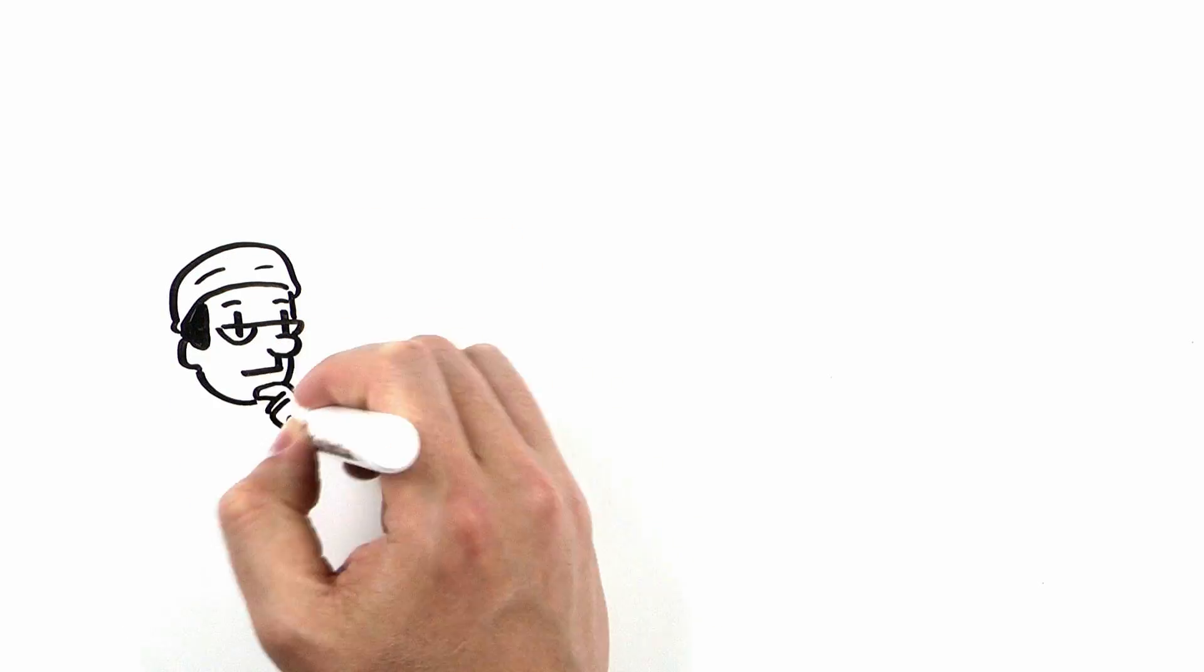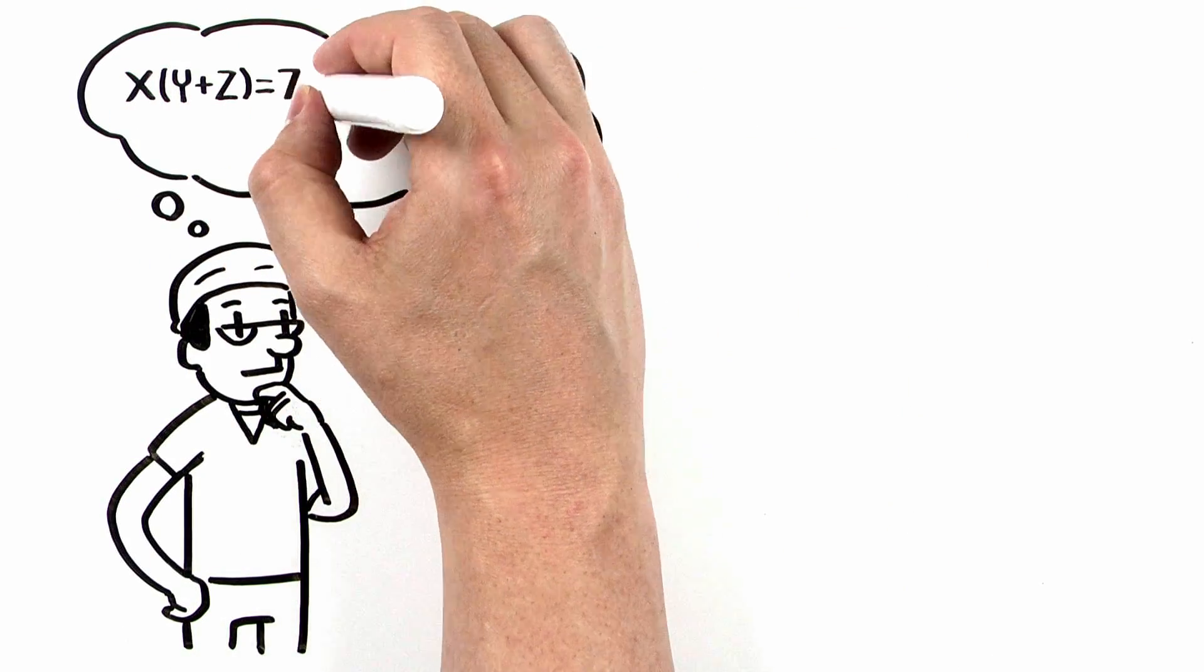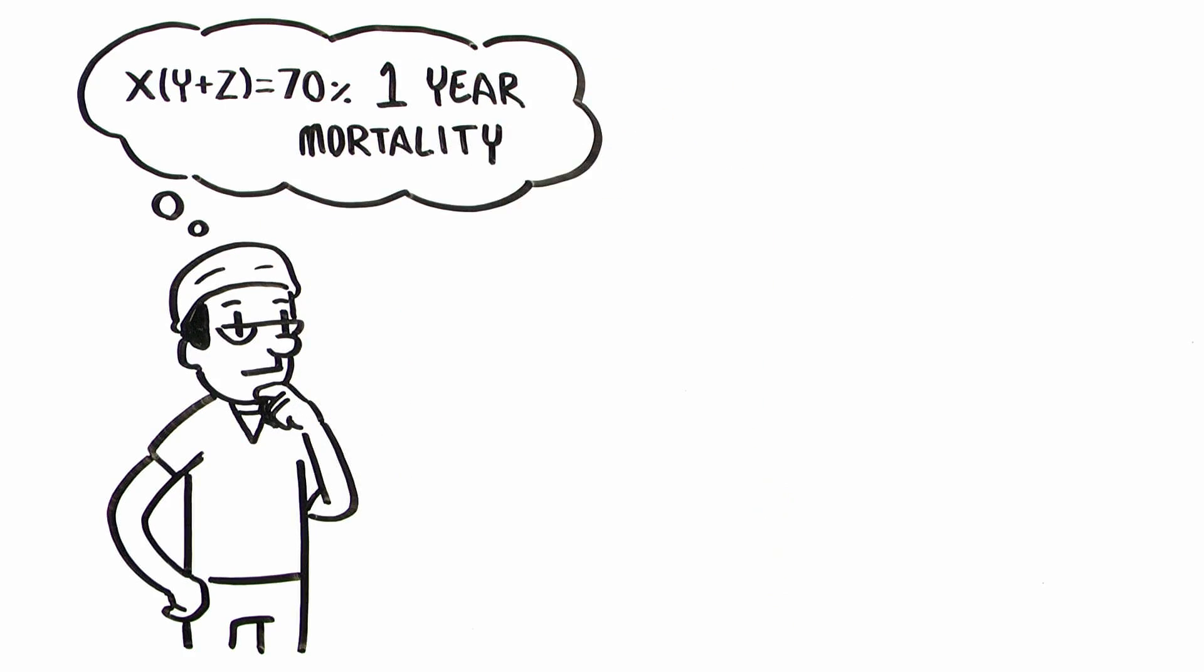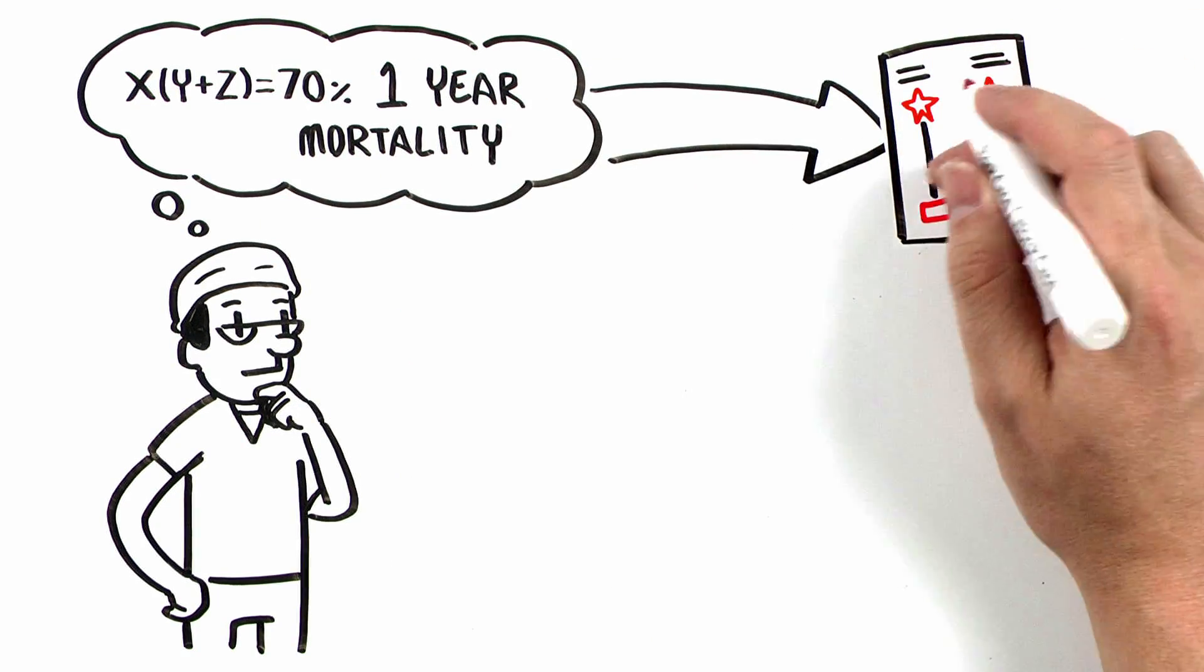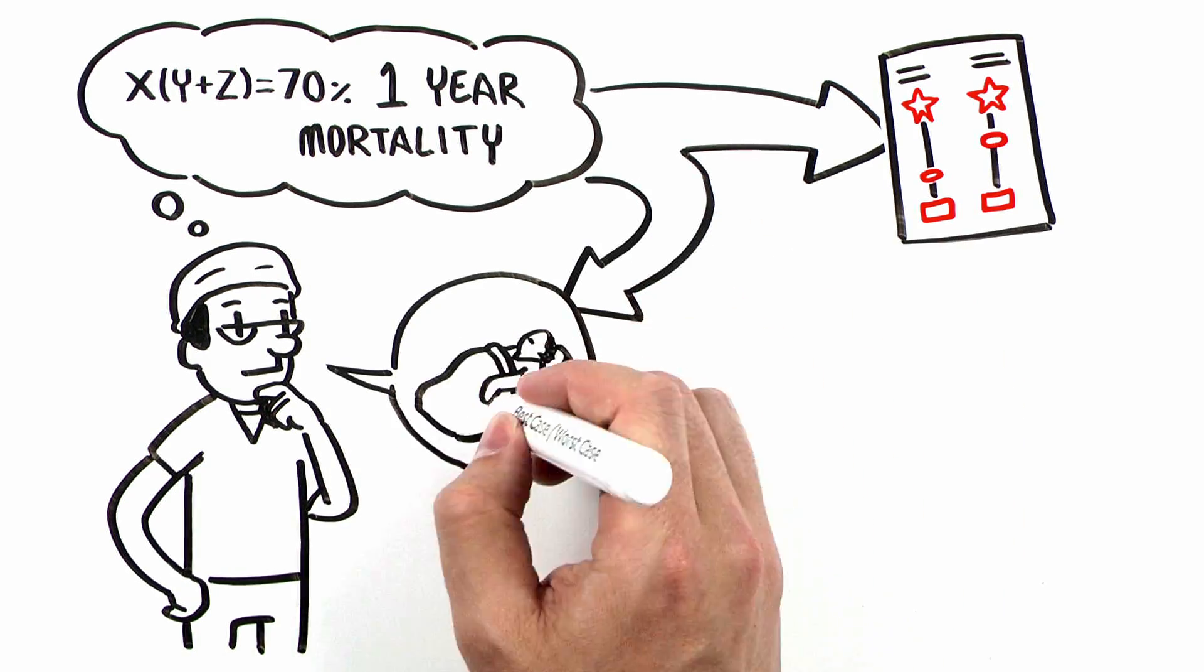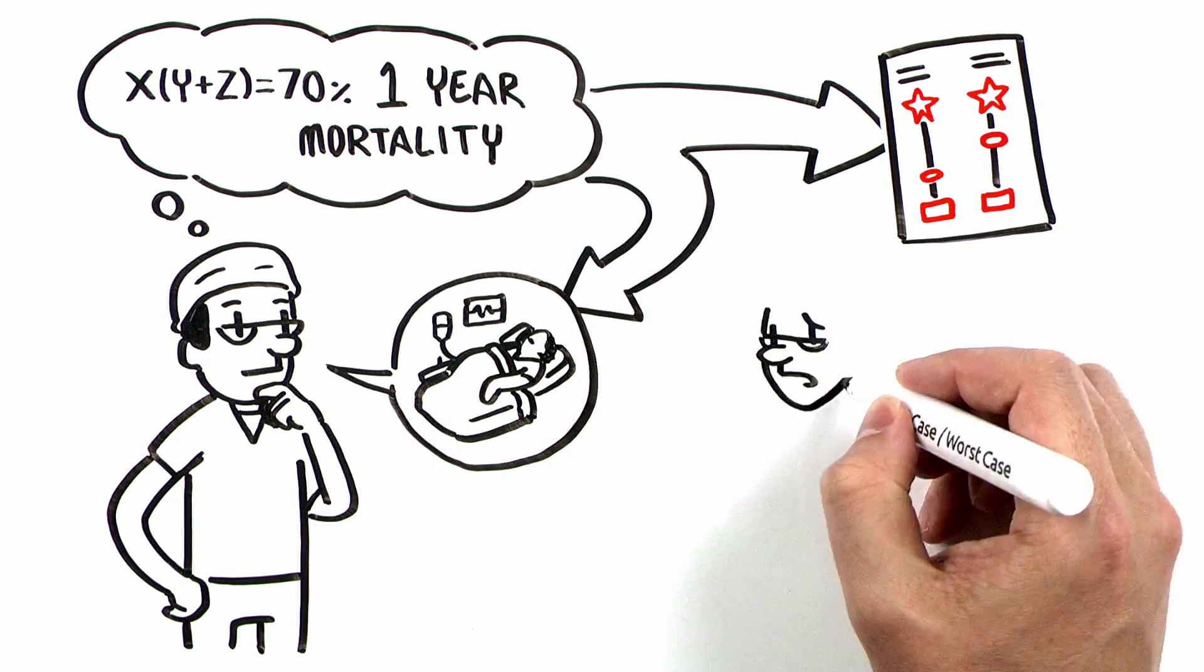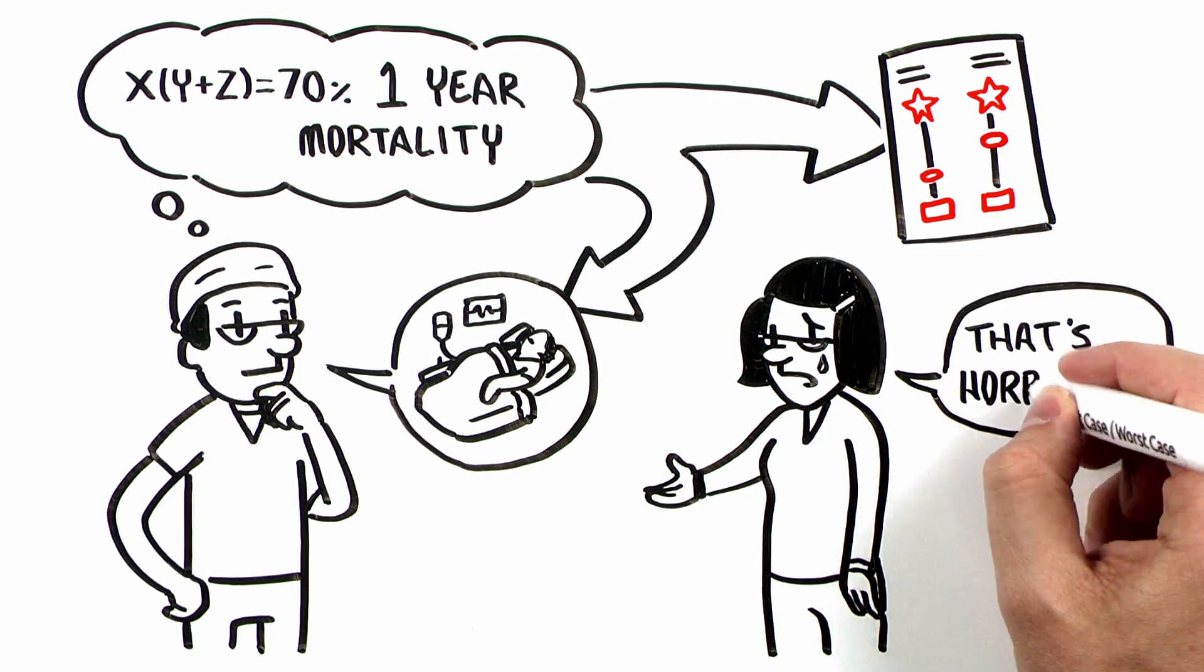As physicians, we know that Mr. Lombardi's comorbidities and acute illness predict a nearly 70% one-year mortality. Best Case, Worst Case helps you translate your knowledge of this important statistic. Telling stories about the range of possible outcomes allows patients and families to visualize what might happen in a way that numbers alone cannot.